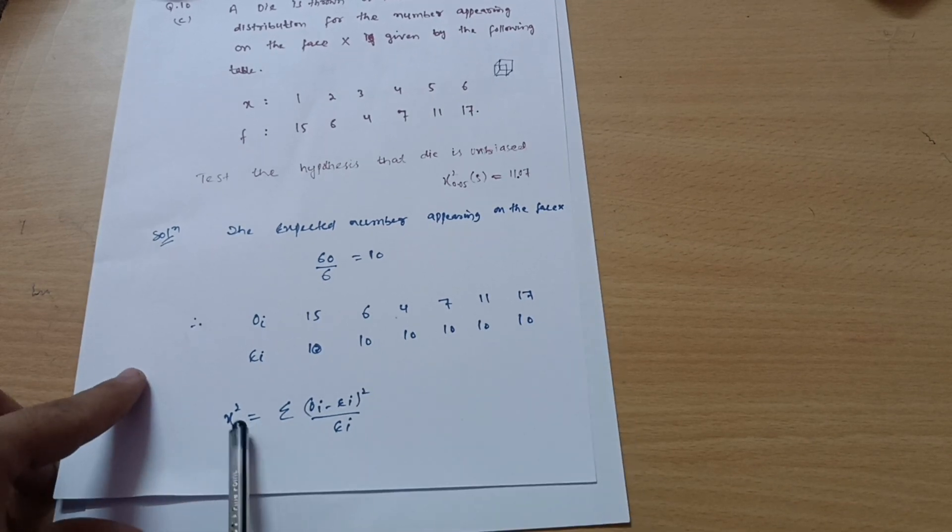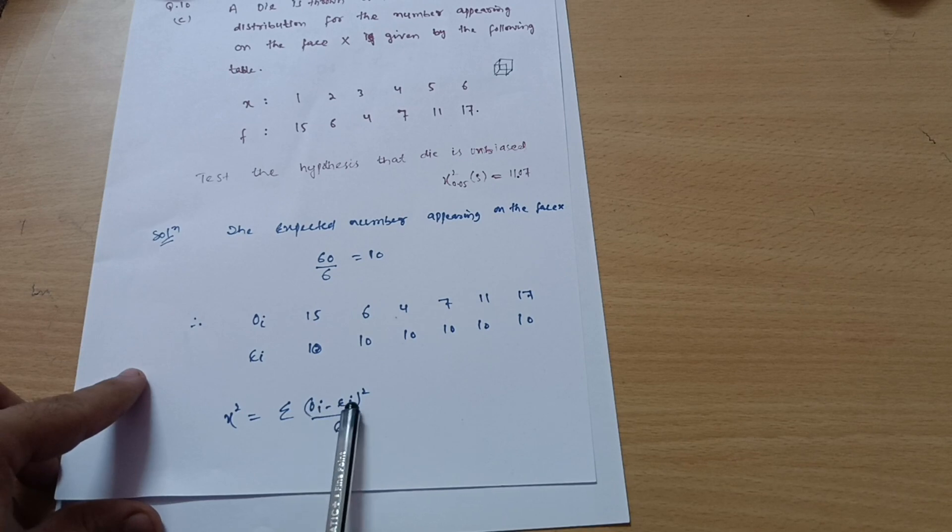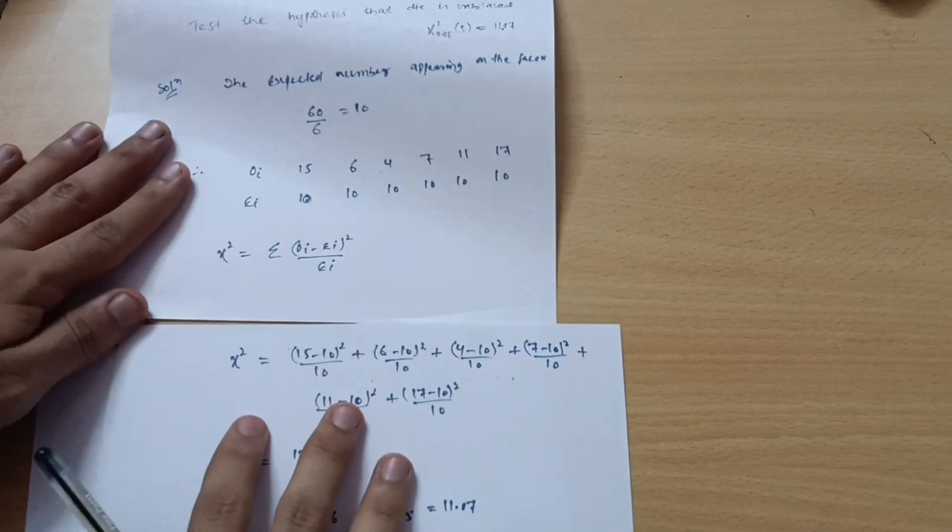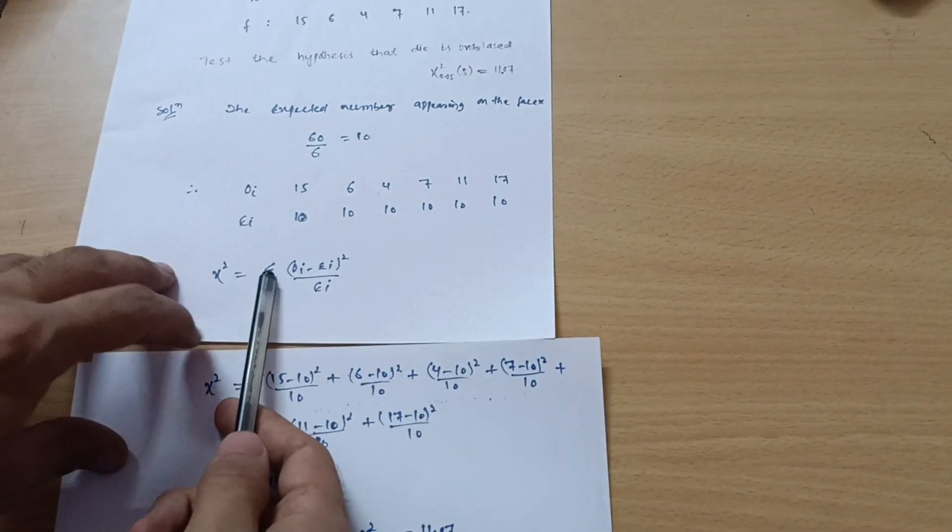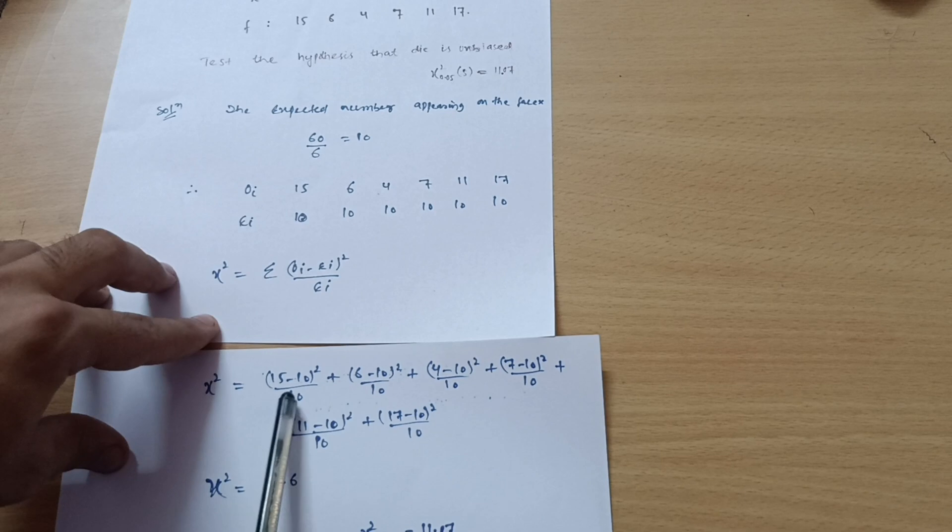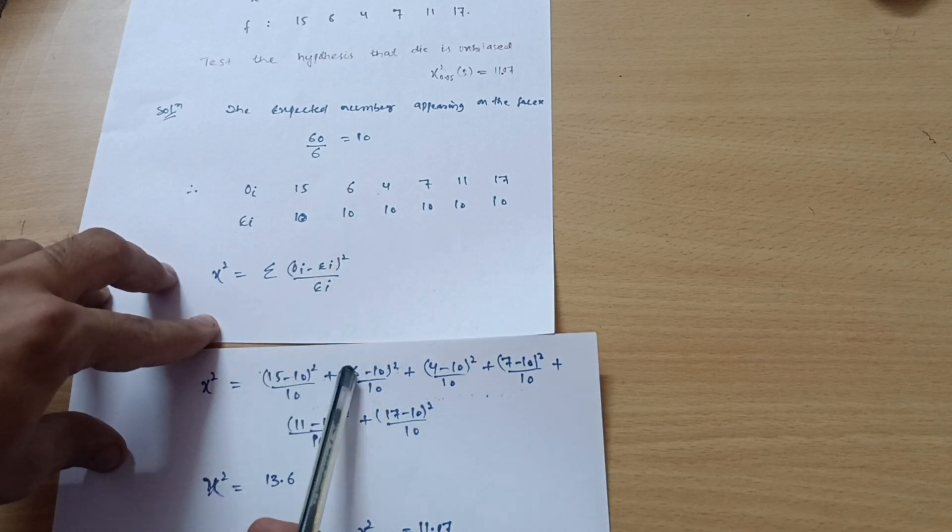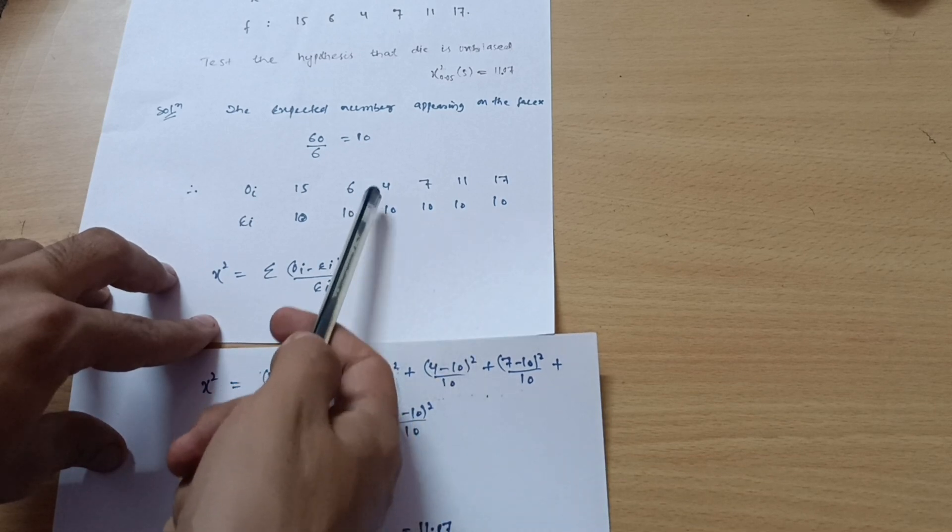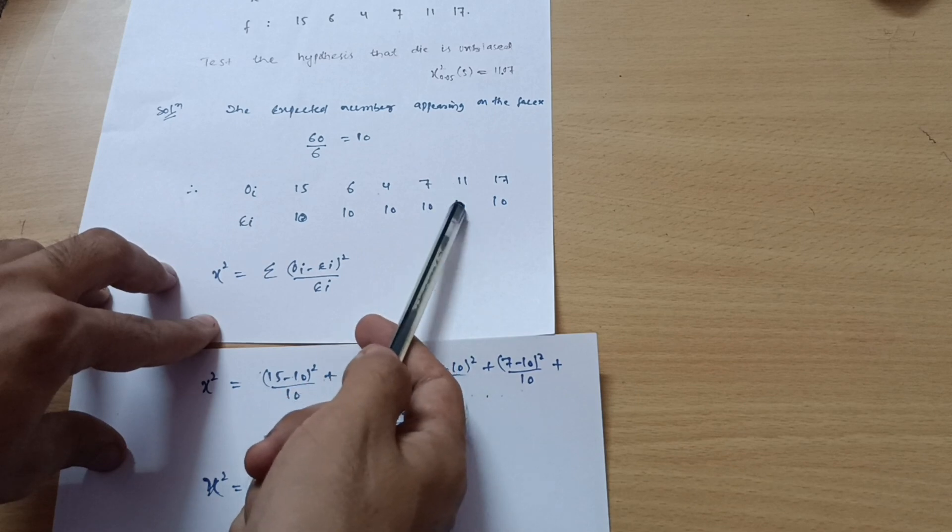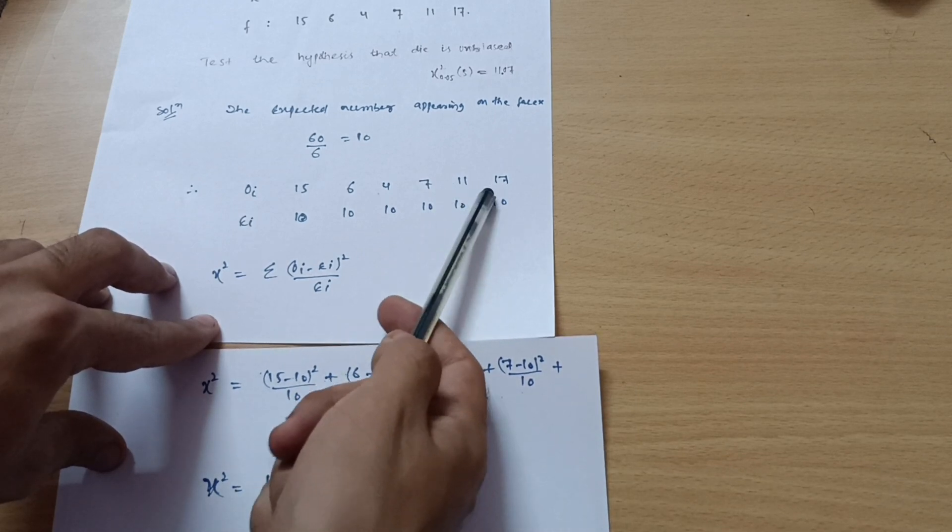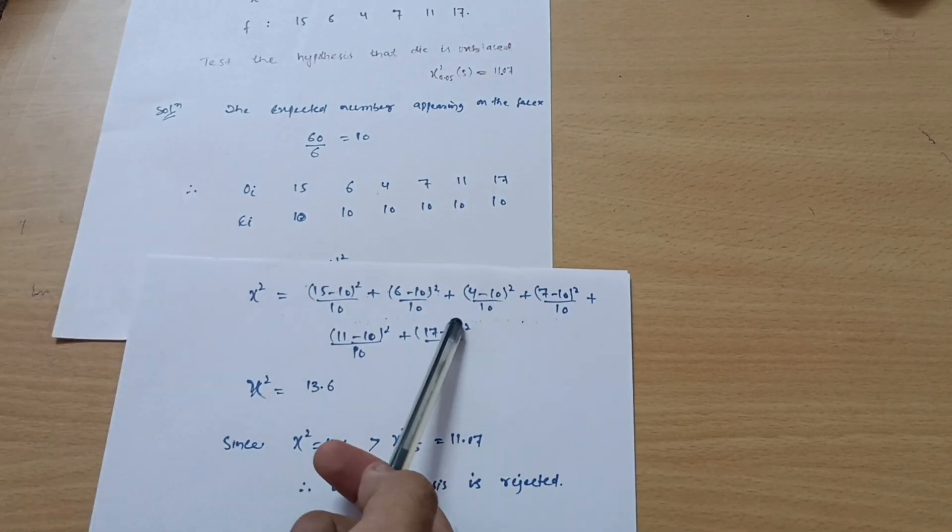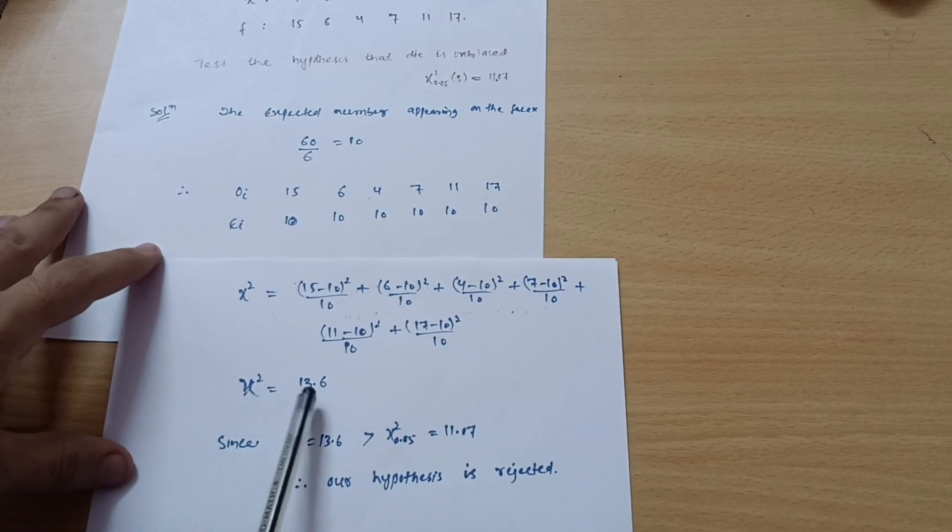Then we have the formula for chi-square. It is given by summation of (Oi minus Ei) whole square divided by Ei. Now see here I have calculated the values. Compare the formula and write down the values. This is your summation of Oi minus Ei. Oi is here 15 minus 10, so 15 minus 10 whole square divided by Ei value is 10 for each, divided by 10 plus 6 minus 10, 6 minus 10 divided by 10 whole square plus 4 minus 10, 4 minus 10 whole square divided by 10, 7 minus 10, 7 minus 10 divided by 10 whole square plus 11 minus 10, 11 minus 10 whole square divided by 10 plus 17 minus 10 divided by 10. You will get while calculating this much, you just put down these values in your calculator, so you will get chi-square equal to 13.6.